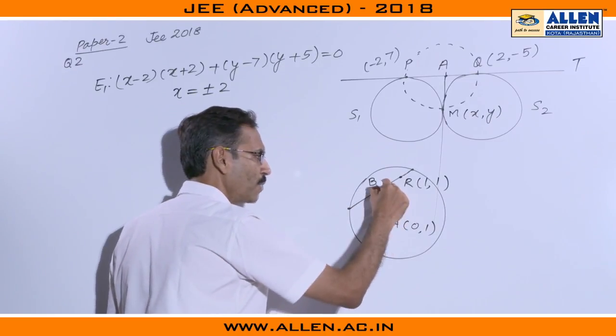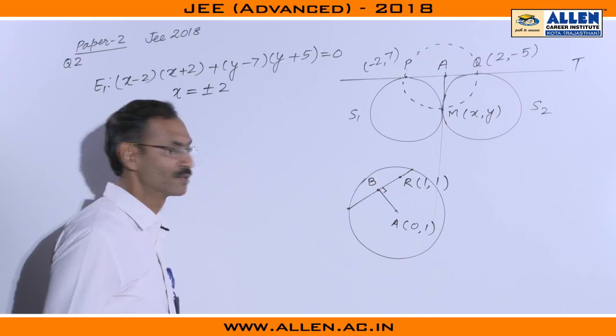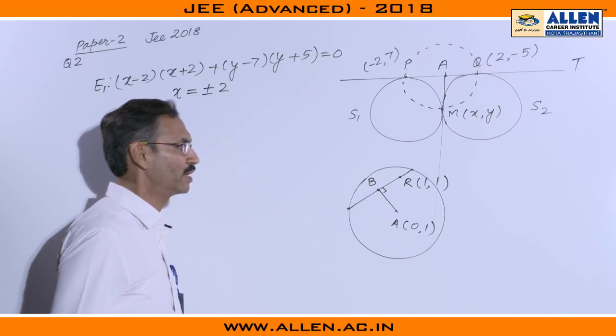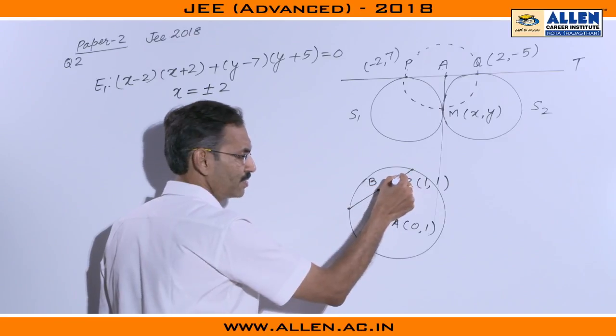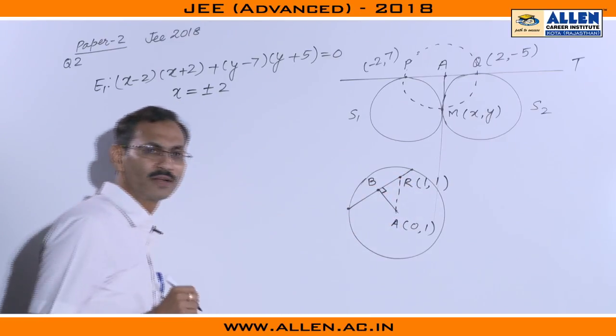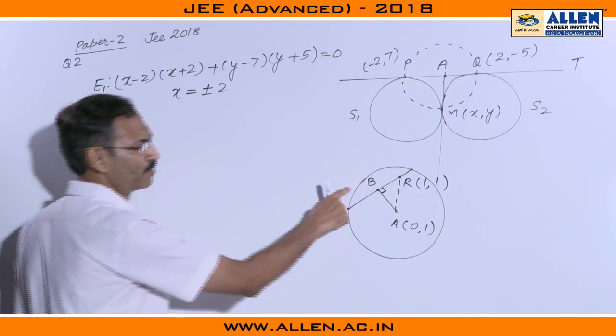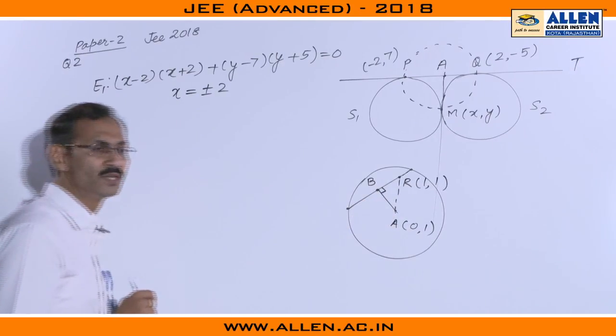If I draw a perpendicular from the center on this line segment, B will be the foot of perpendicular. So I can say I have to find the locus of B and I can see this angle will always be a right angle. So the locus of B will be again a circle for which AR is diameter.